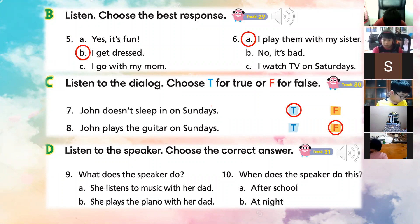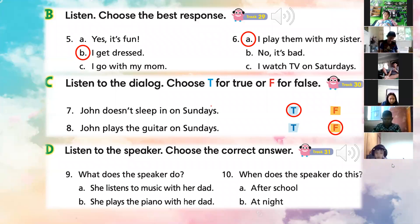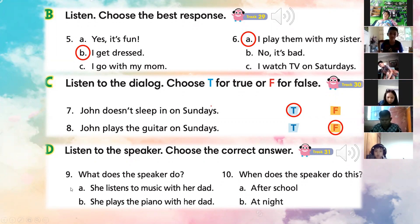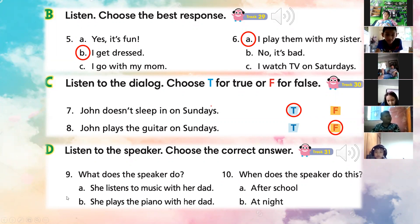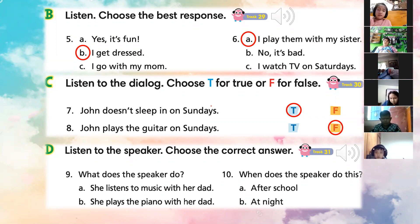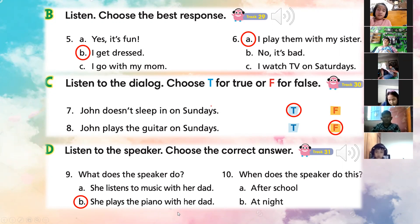Okay, let me ask one student. Don't answer by yourself. Tamatat — question number nine: What does the speaker do? Does she listen to music with her dad, or does she play the piano with her dad? B. Exactly, B is the correct answer — she plays piano with her dad.